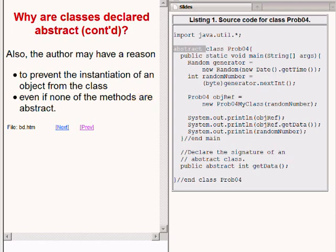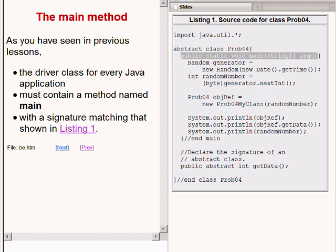As you have learned in previous lectures, the driver class for every Java application must contain a method named main with a signature that matches the method signature shown for the main method on the right of your screen.